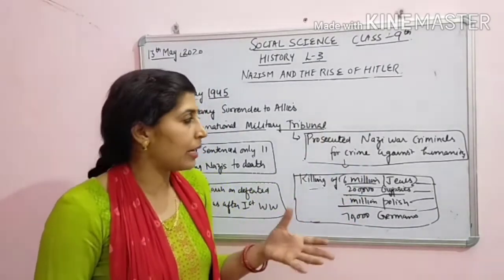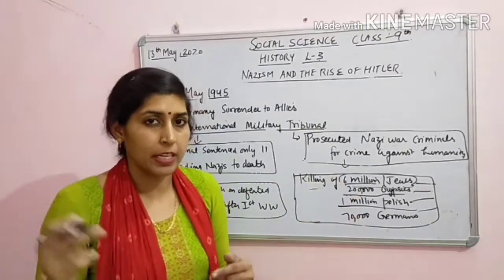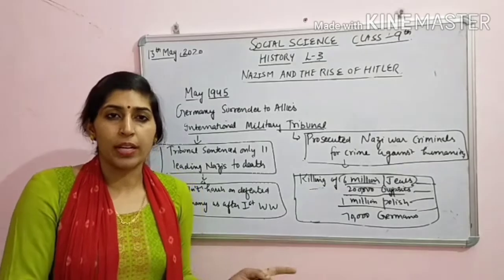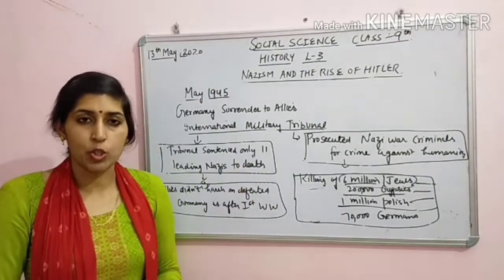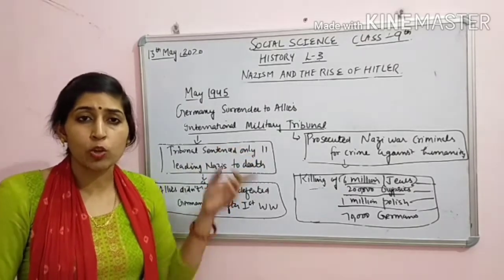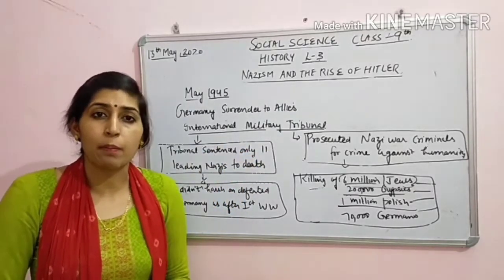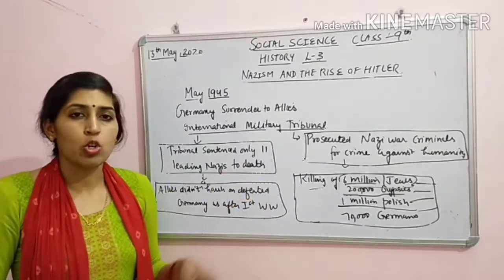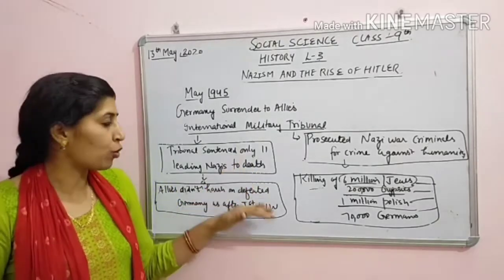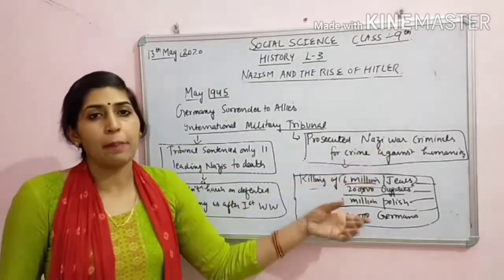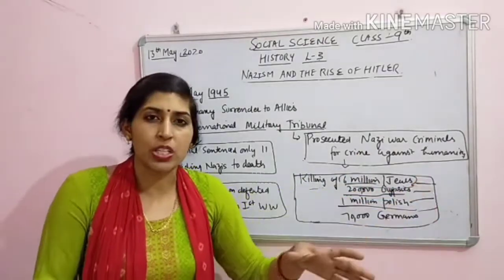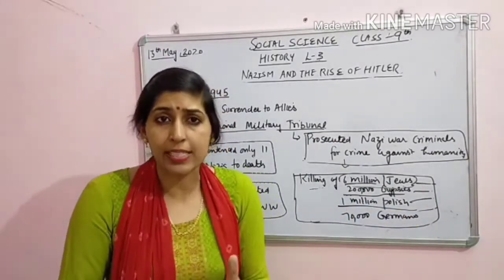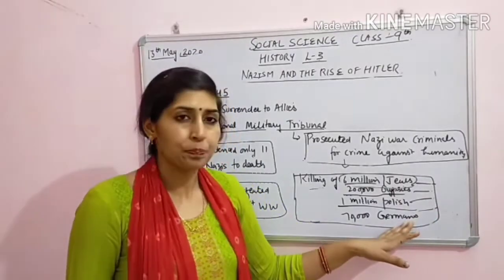Hitler chahta tha - Hitler ki Nazi policies mein - ki woh Nordic Aryan race ko preserve karna chahta tha. Germany mein only pure Nordic Aryan race survive kare, baaki logon ko woh eliminate karna chahta tha. Yeh Nazi ideology thi Hitler ki thinking - kin cheezein par based thi. Yeh hum Nazi policies mein padhengi.